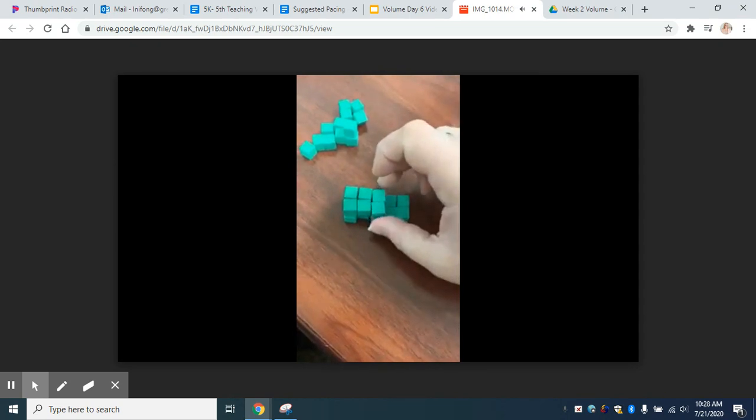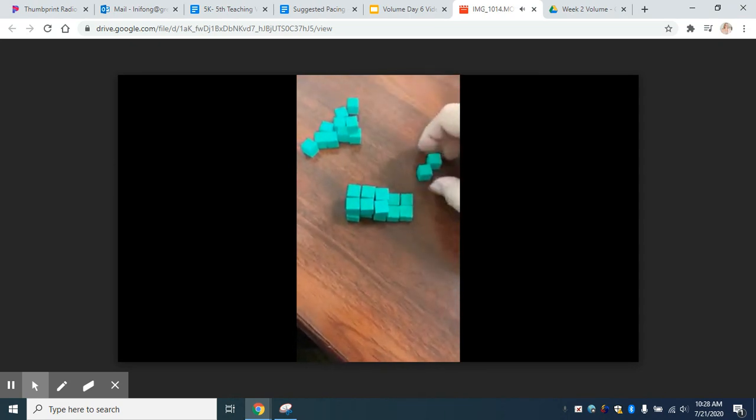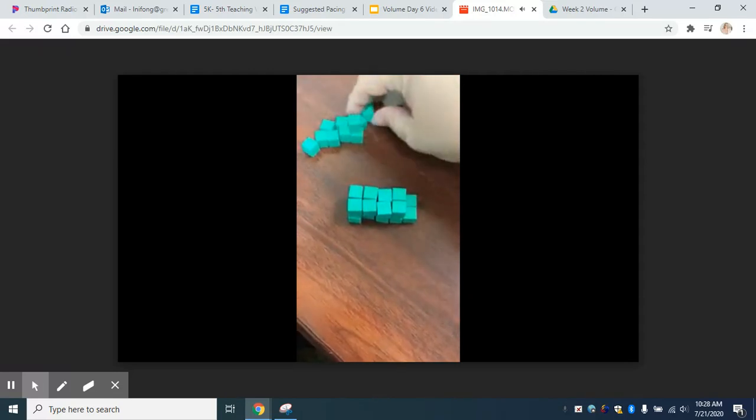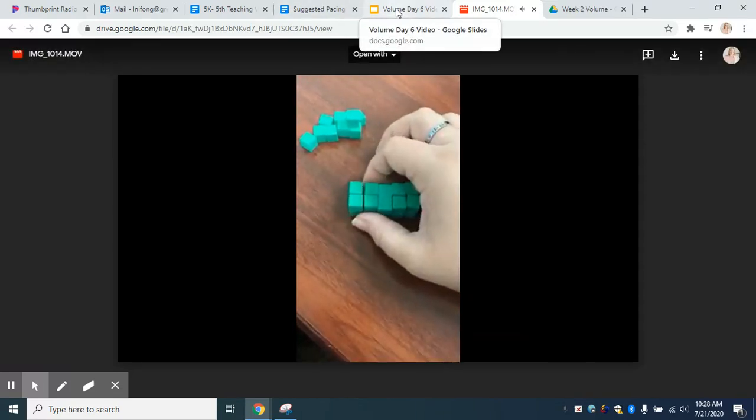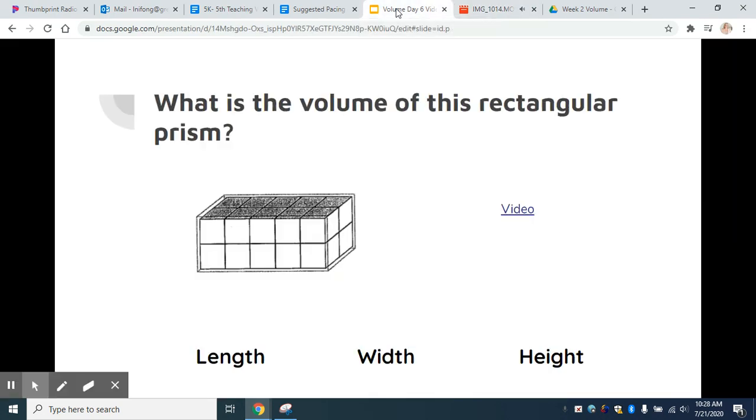And when I'm finished, based on repeated addition and what I know about multiplication, two layers of 10, 10 plus 10 or 10 times 2 would be 20 unit cubes. That would be the total volume of this rectangular prism.